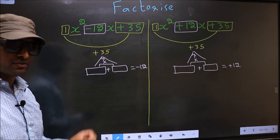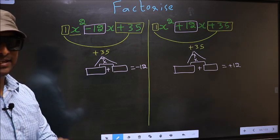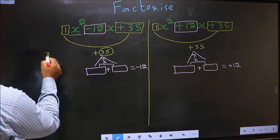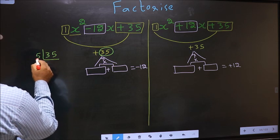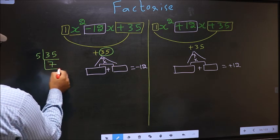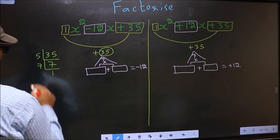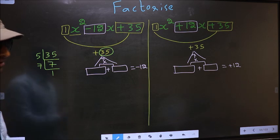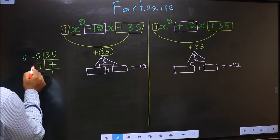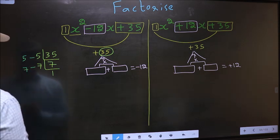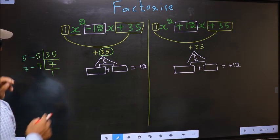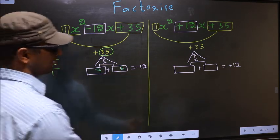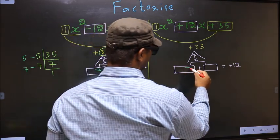To get those two numbers, we should take the LCM of 35. 35 is 5 sevens 35. Now 7 is a prime number, so 7 ones 7. The two numbers should be: first number is 5 and the second number is 7. 5 plus 7 is 12, and 5 into 7 is 35. So here we write 7 and here 5.